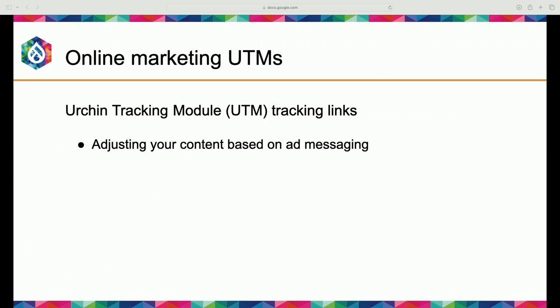Online marketing UTMs — those snippets at the end of a URL that you use when tracking marketing initiatives and ads. The most common scenario is adjusting a landing page based on whatever was in the ad. For example, you might have two Facebook ads with the same content but different images — for a university, one showing students in a library and another at a sporting event.